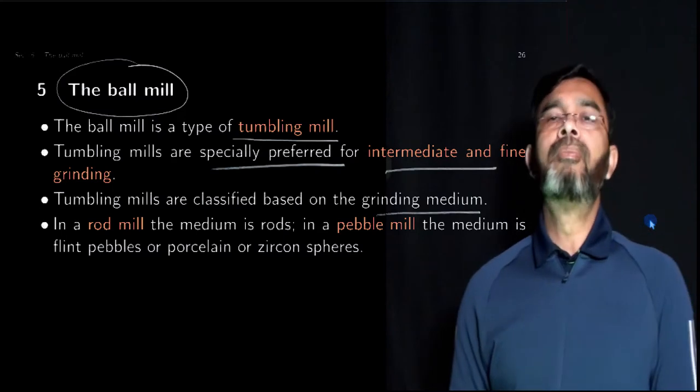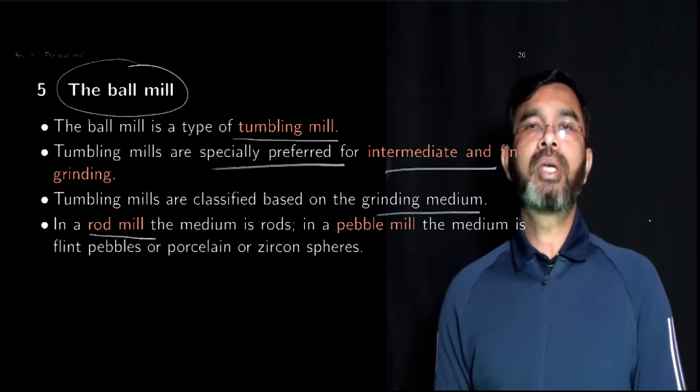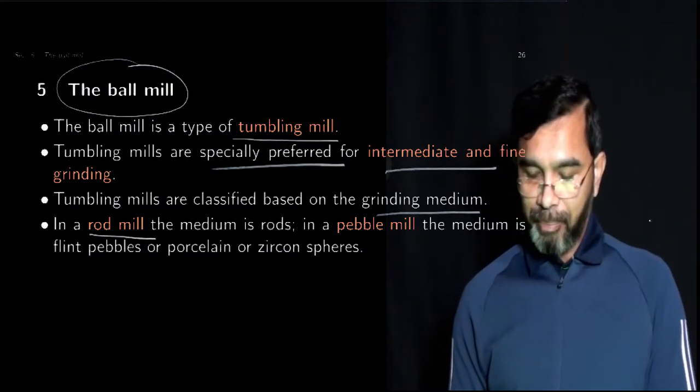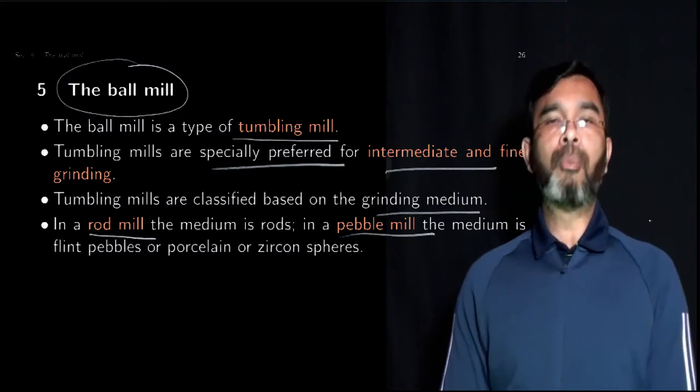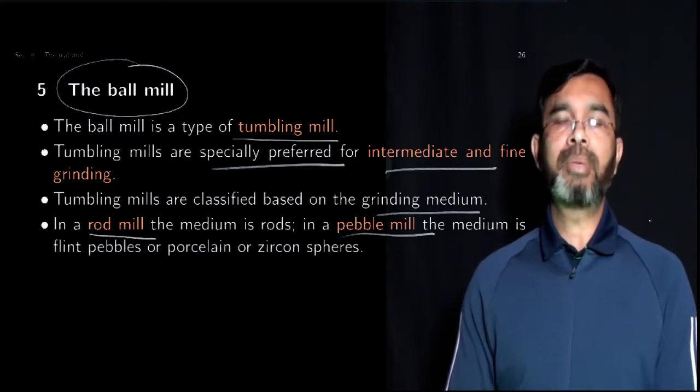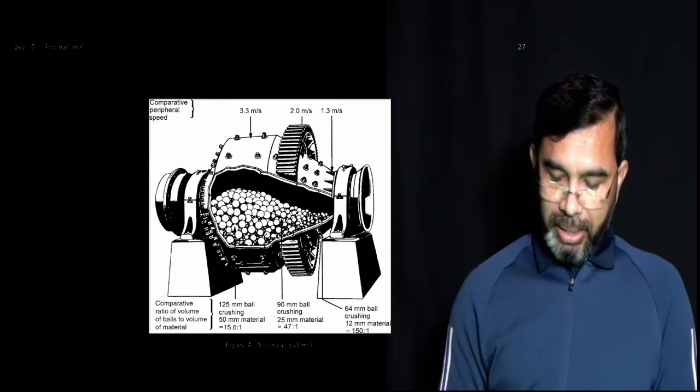Depending on the grinding medium, there are different types of these tumbling mills. As the name says, the rod mill uses rods as the grinding medium, the pebble mill uses pebbles as a grinding medium, and the ball mill uses different sizes of spherical balls as a grinding medium.